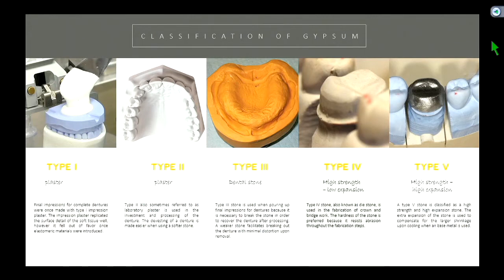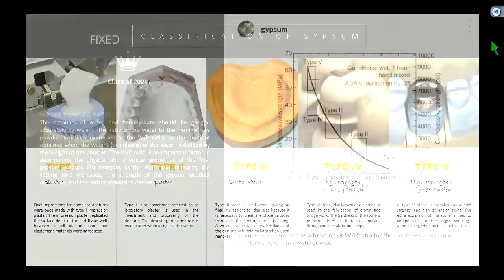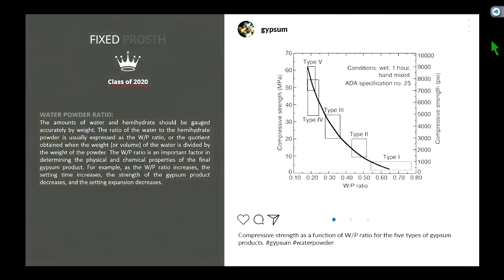That's why we have type 4 and 5 with varying levels of expansion — to compensate for the different types of metal we may be using, since some metals shrink more than others.